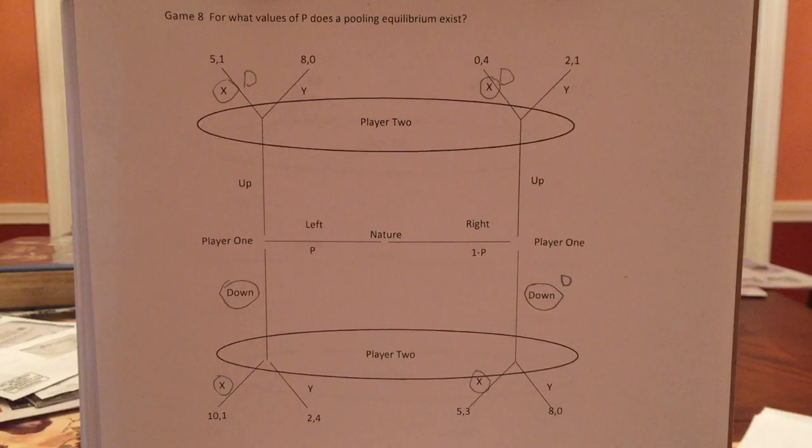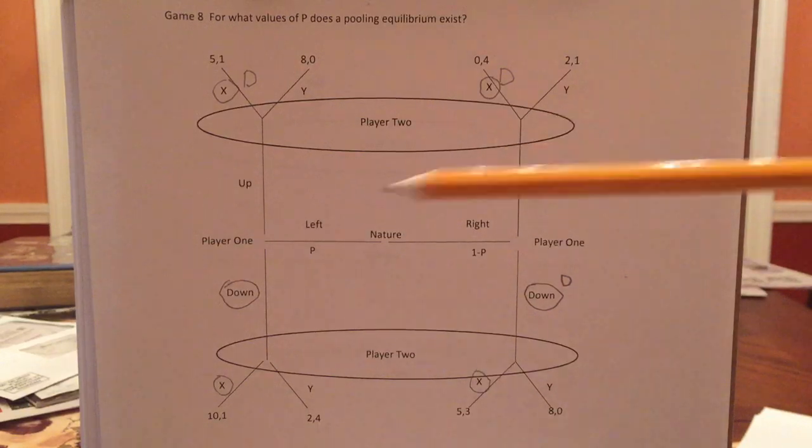Can this be a pooling equilibrium? Can this be a no regret equilibrium? And maybe this will tell us, this will limit what P can be. Let's start. We have four things. Let's see.